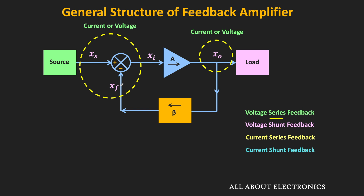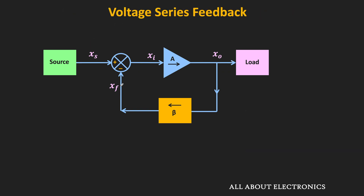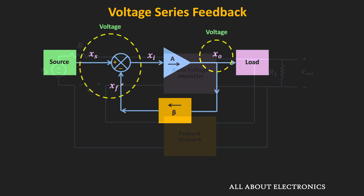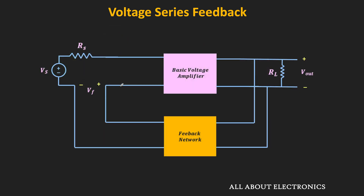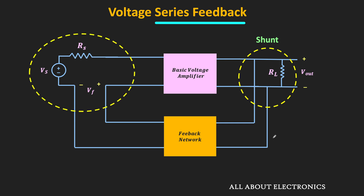Based on the type of topology, the input and output impedance of the amplifier will change. The first feedback topology is voltage series feedback. In this topology, the sampled signal is voltage and the signal sent to the input side is also voltage. To sample the output voltage, the voltage across the two terminals of the basic amplifier is connected to the feedback network — this is a shunt connection. On the input side, the feedback voltage is subtracted from the source signal in a series connection.